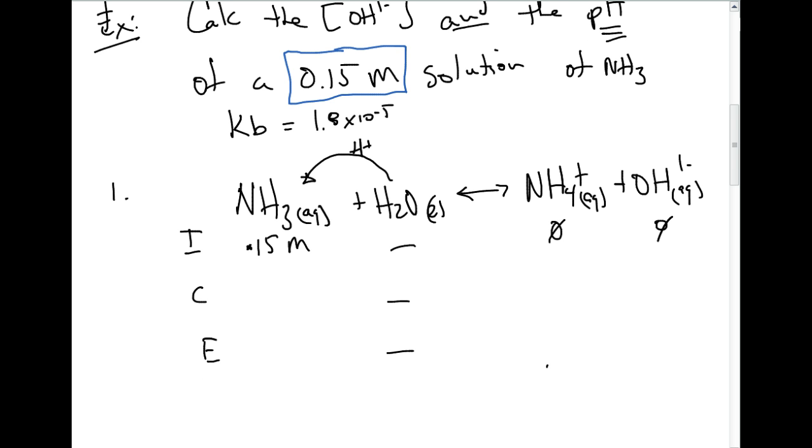We don't have any of this to start off initially. We're not being given the pH of the solution, we're being asked to calculate the pH of the solution. This reaction is going to go to the right, and so we're going to have plus x, plus x, x and x, and then we're going to have 0.15 minus x over here.